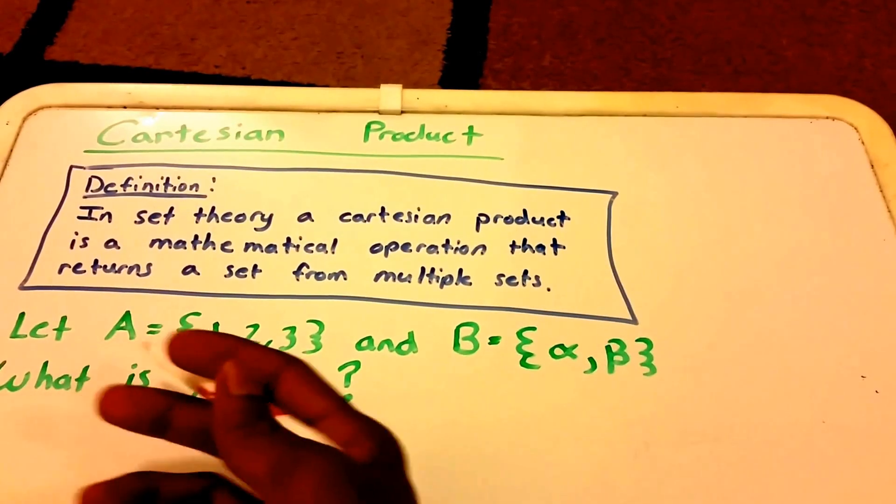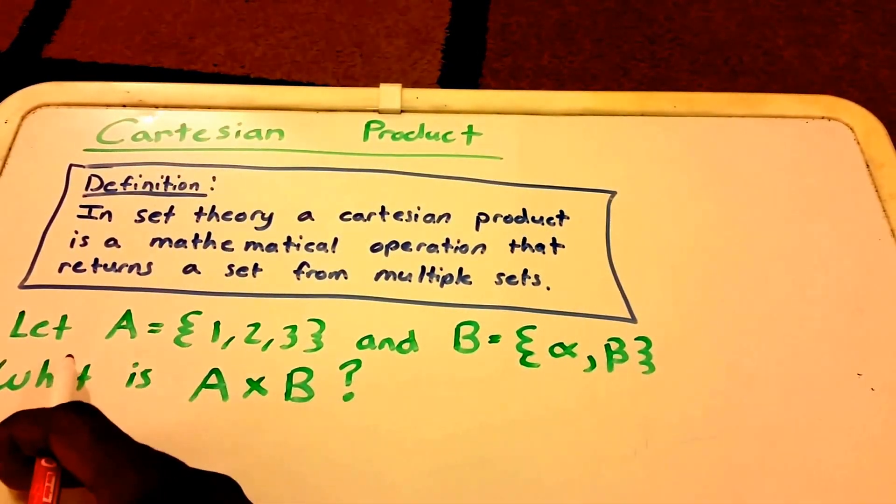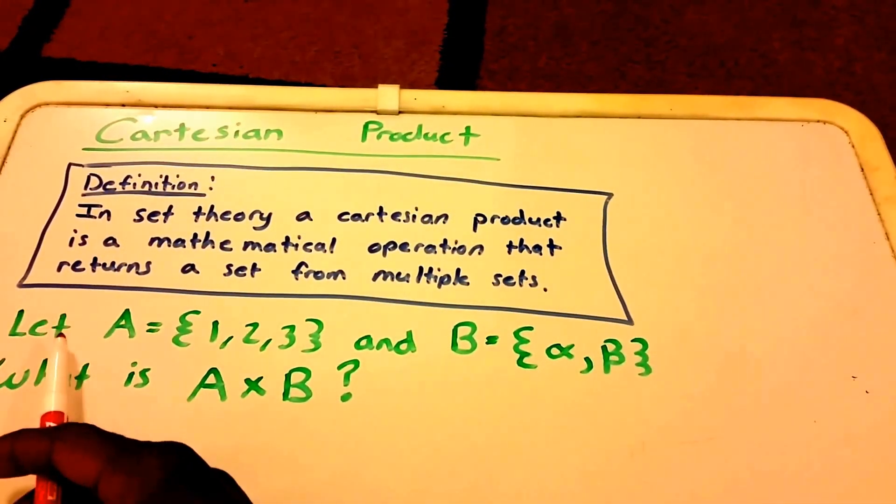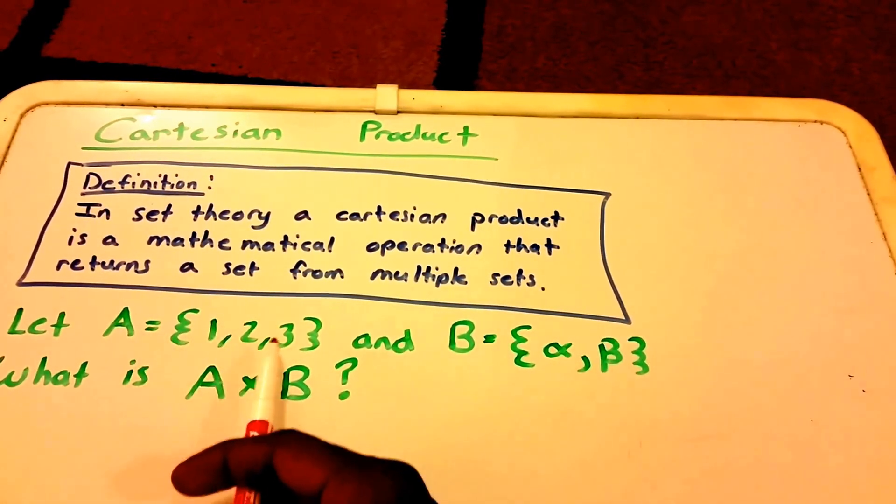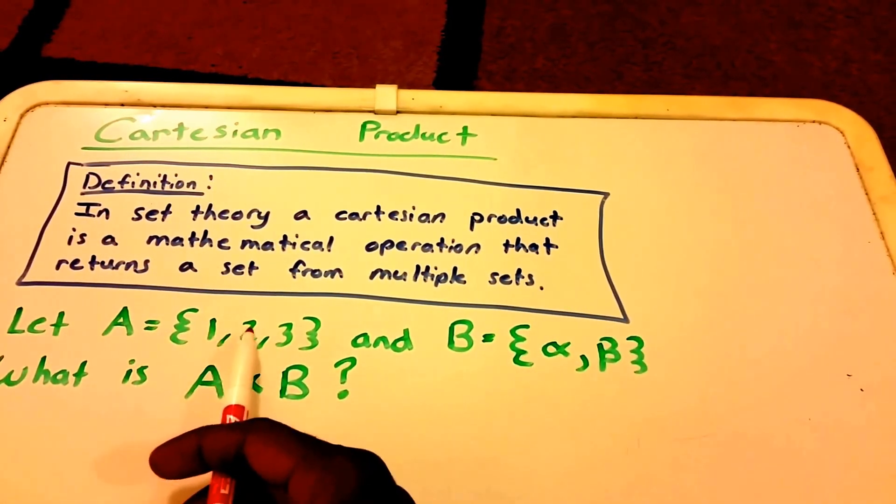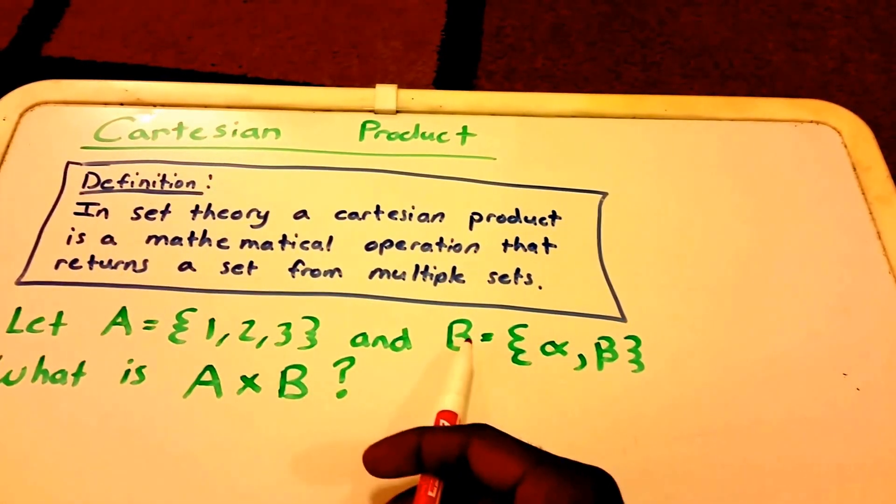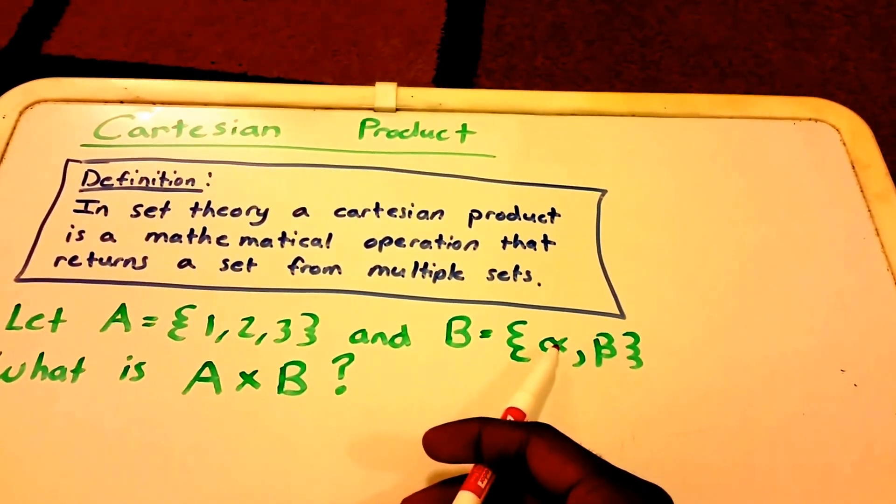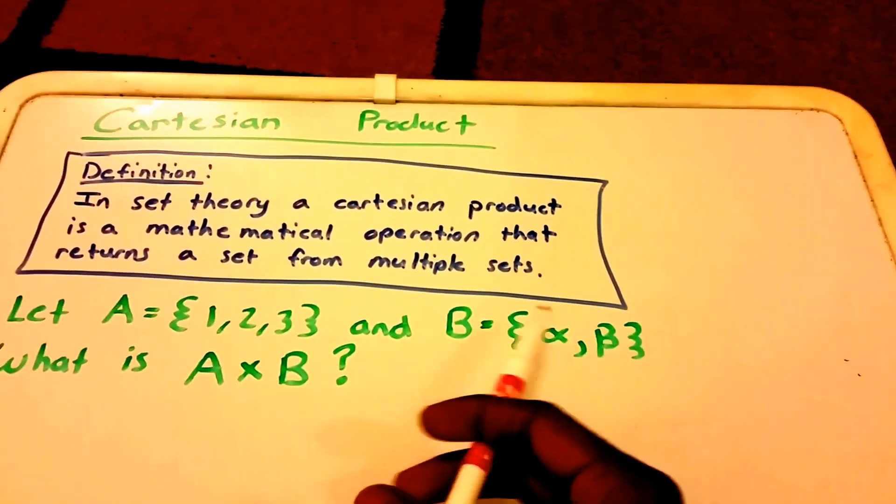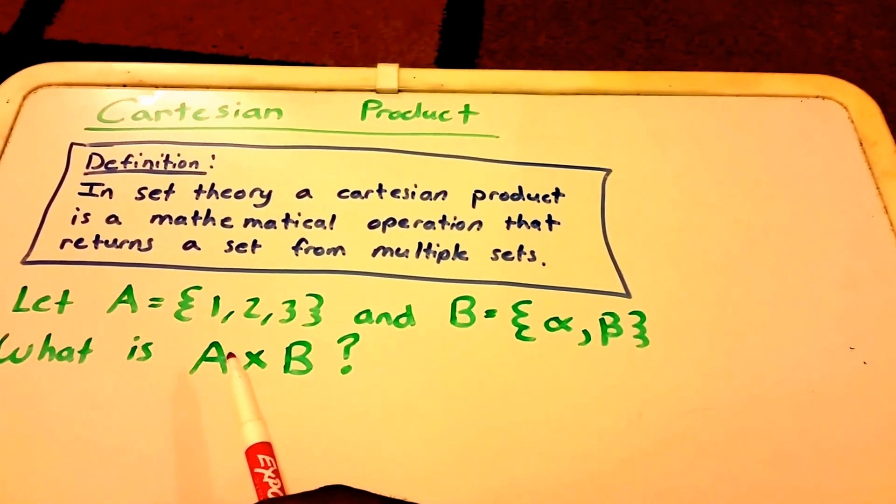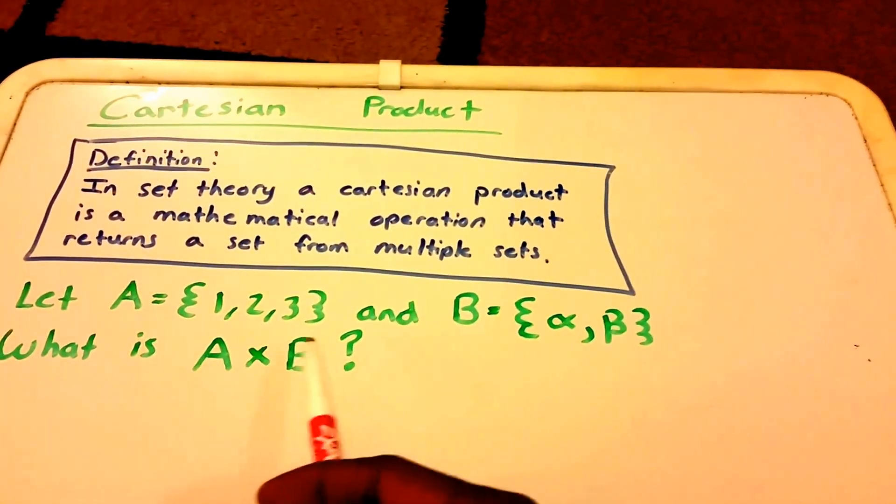So here I have a problem, or an example. What we do is we let A equal the set that contains elements 1, 2, and 3, and we let B equal the set that contains alpha and beta, and then we want to know what is the Cartesian product of A and B.